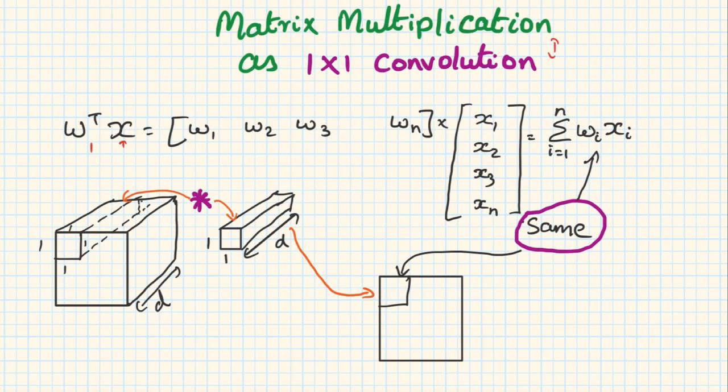If you look closely, matrix multiplication and 1 by 1 convolution can be expressed in terms of each other. So let's look into an example.